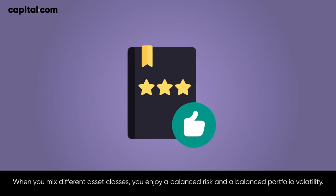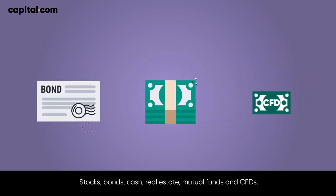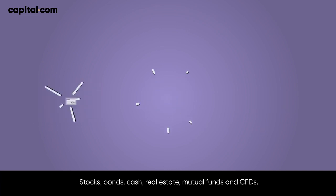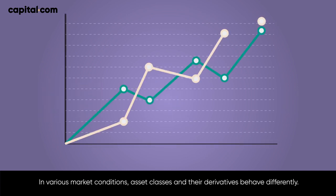When you mix different asset classes, you enjoy a balanced risk and a balanced portfolio volatility. Stocks, bonds, cash, real estate, mutual funds, and CFDs — in various market conditions, asset classes and their derivatives behave differently.